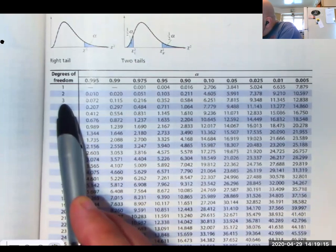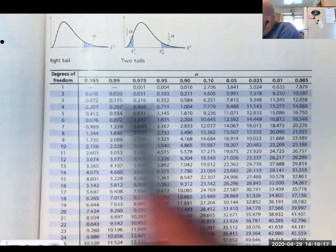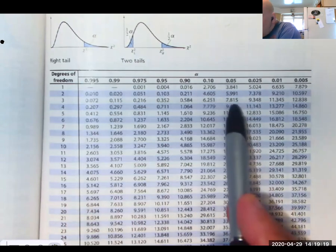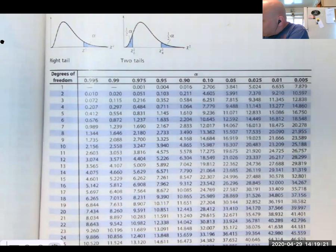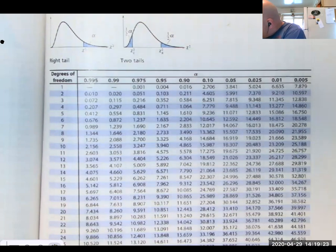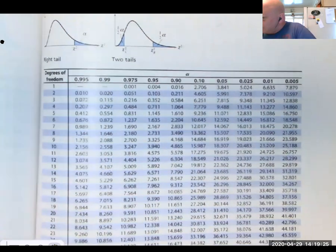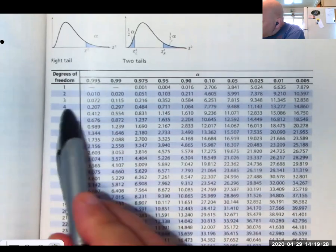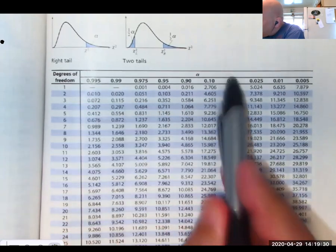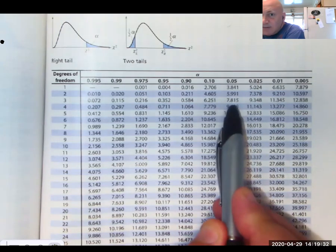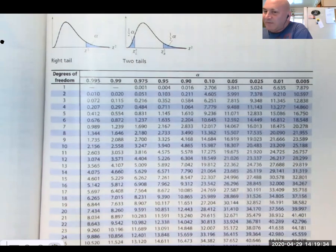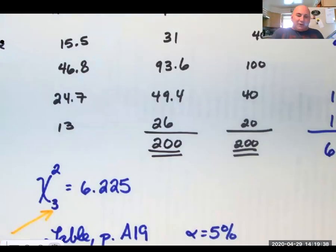And we have three degrees of freedom. And if we want a 5% alpha, we come over here to 7.815. Again, three degrees of freedom, 5% alpha. 7.815 is our critical value for the chi-squared statistic.